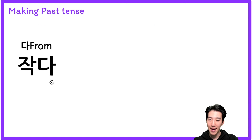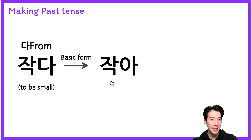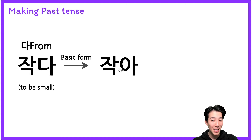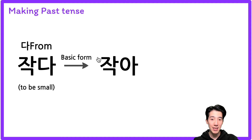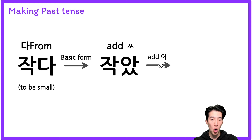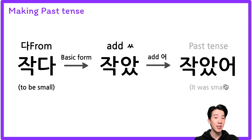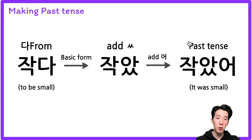The dictionary form 작다 means 'to be small.' So to make the past tense, the first step is we're going to make the basic form: 작아. The vowel is 아, so there's 받침. From the basic form 작아, I'm going to add 받침 here — and after that I'm going to put 어. So it becomes 작았어.